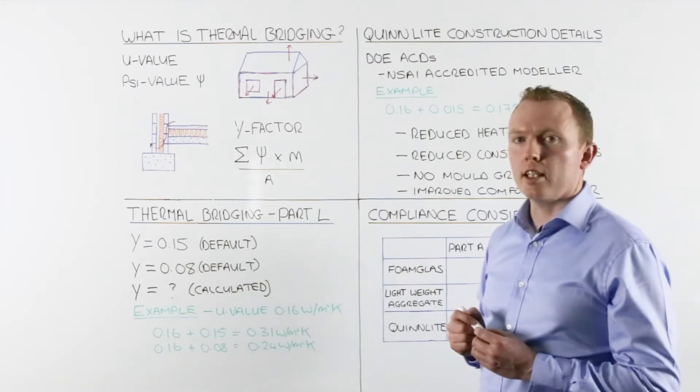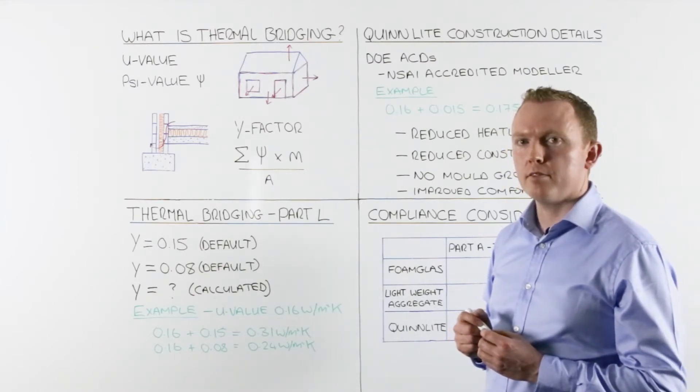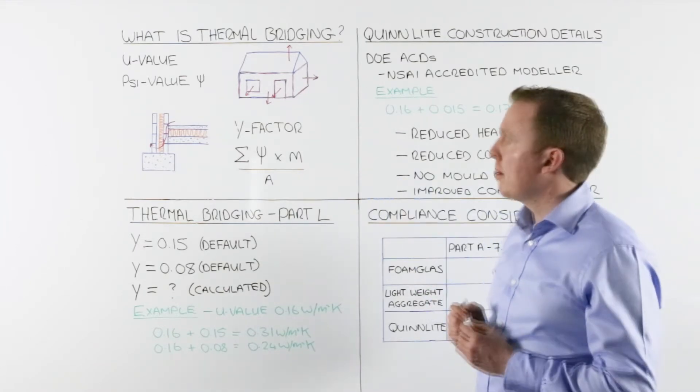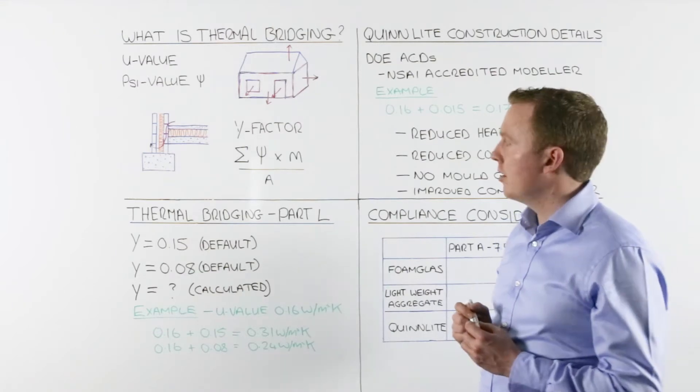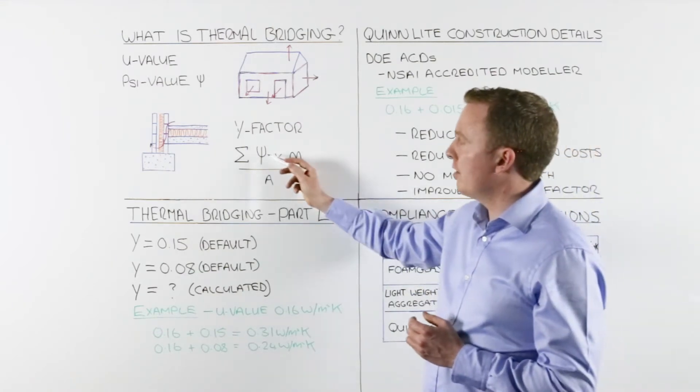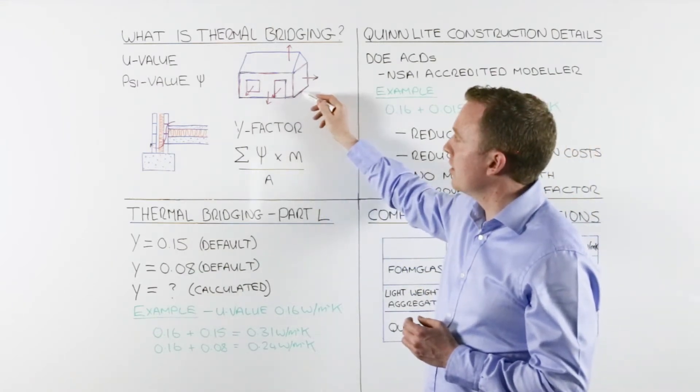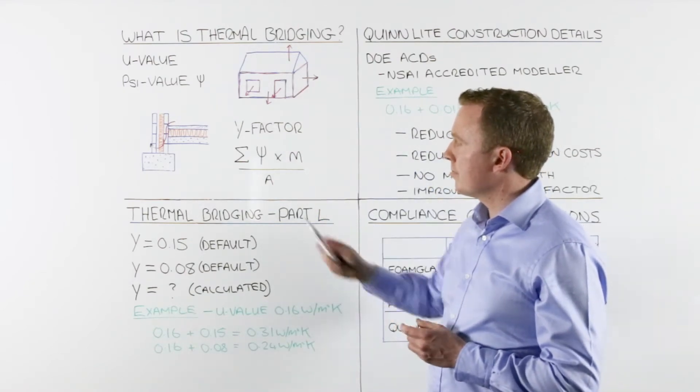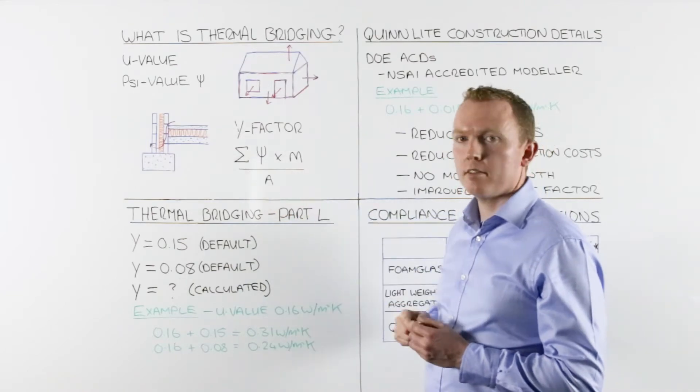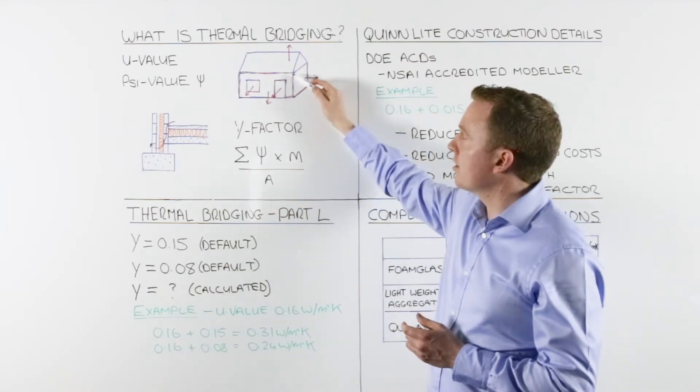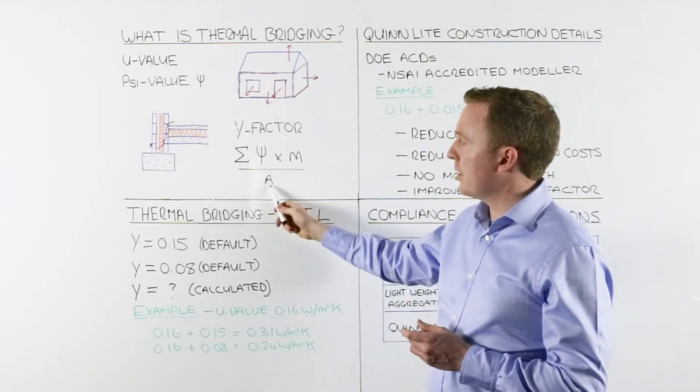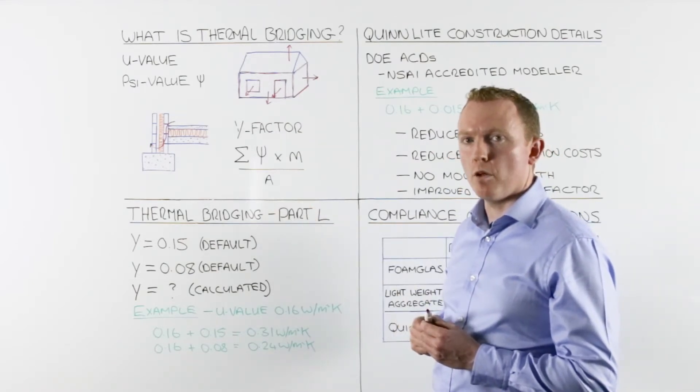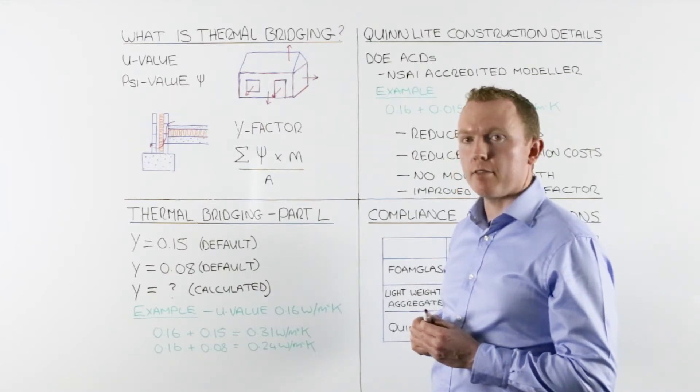So how do we deal with this then in our BER calculations? In our BER calculations, we have to apply a thermal bridging factor—this is known as the Y-factor. To calculate the Y-factor, we take the ψ-value of each junction and multiply it by the length of each junction. The combination of these for every junction in your building, divided by the envelope area—which is the area of your floors, walls, and roof—gives us our Y-factor.